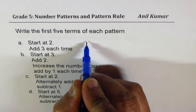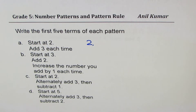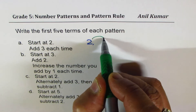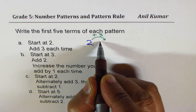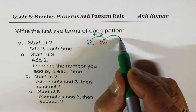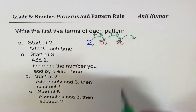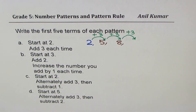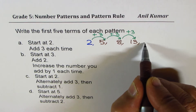Start at two means the first number has to be two. Now it says add three each time, so on two you do the operation plus three. When you add three, two plus three is five. Each time means keep on adding three — so you get five plus three as eight. And then again when you add three, the pattern is growing. So this is also a growing pattern.